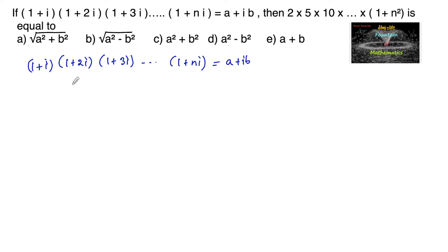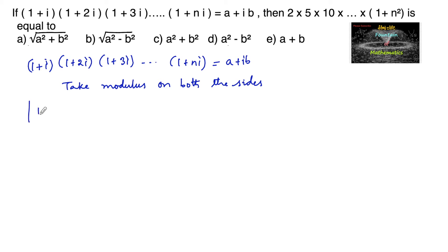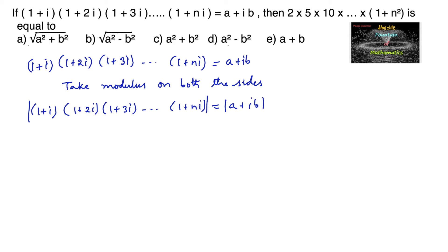Let us apply modulus on both sides. So we have modulus of (1+i) into (1+2i) into (1+3i) and so on (1+ni), which is equal to modulus of a+ib. And since we know that mod of z1·z2·...·zn can be written as mod(z1)·mod(z2)·...·mod(zn).